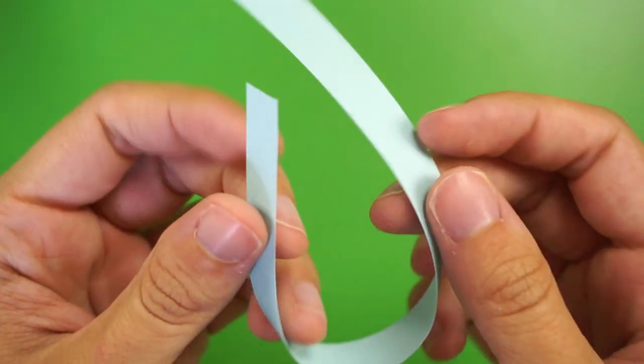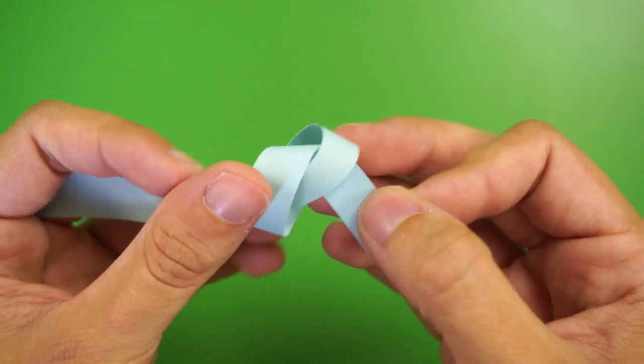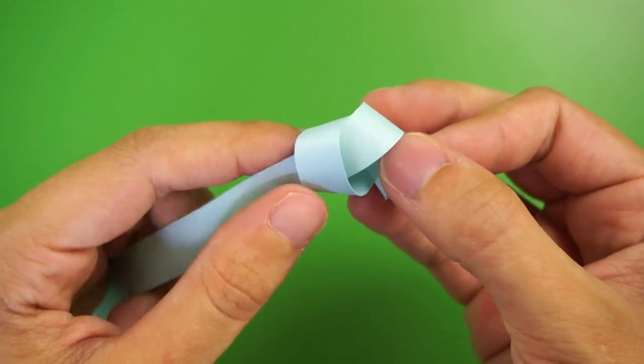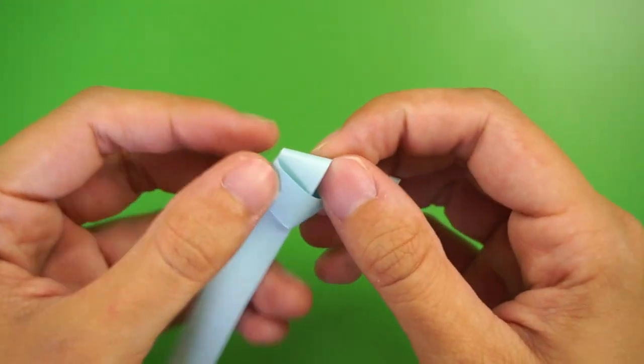Cross one end of the paper strip over the other to make a loop. Then, wrap the top end around the other and push it through the loop like you're tying a knot. Now, slide the knot to one end as you slowly tighten and flatten it.